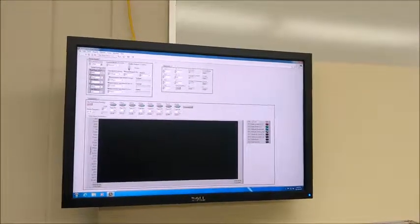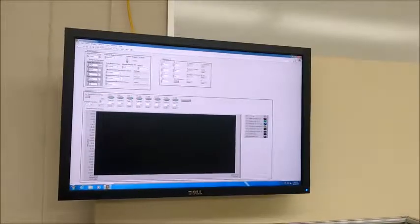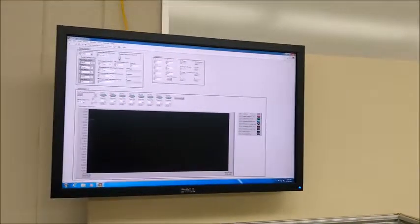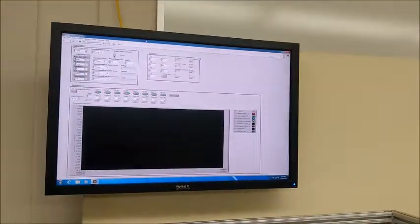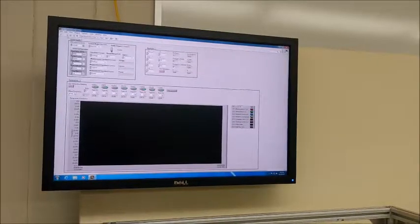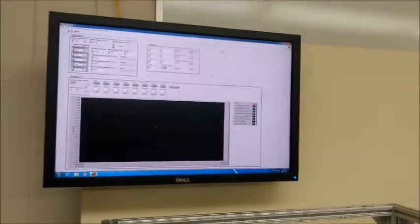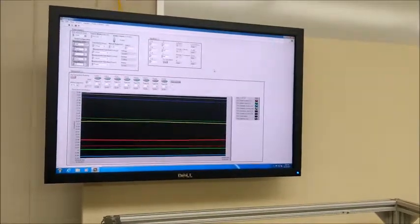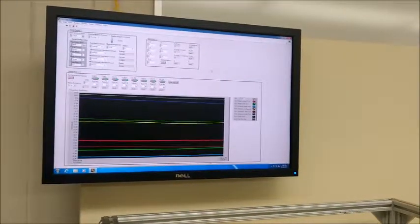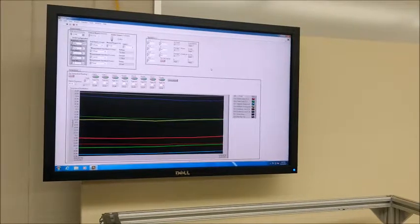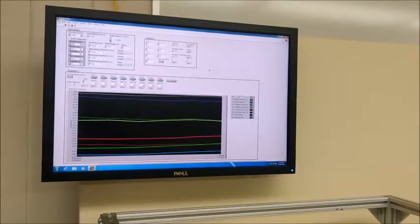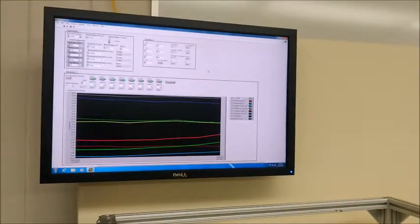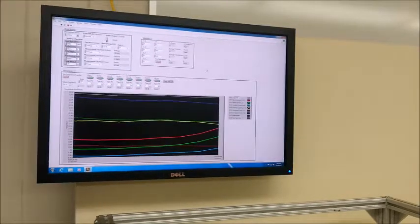Now we are going to check and make sure everything looks correct on the program and everything is operational for the heat pipe. Then we are going to run the program and start collecting data. Now that we are waiting for a few seconds, we are going to make sure everything looks like it is recording correctly and that the heat is going up.